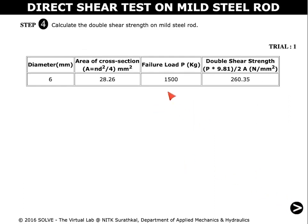These are the observations for trial one. To calculate the double shear method, we can use this formula. Similarly, we follow the same steps for trial two and trial three.